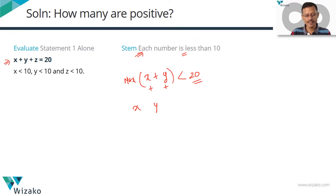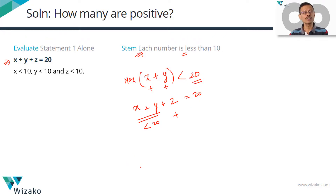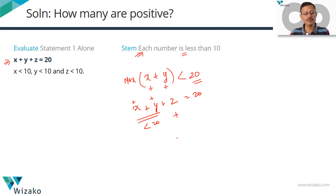If the sum of x, y and z together is equal to 20, and the sum of x and y is already less than 20 even at its maximum, then z must contribute positively to reach 20. We already know x and y are positive from this reasoning. So z must also be positive. If x, y and z are all less than 10 and their sum equals 20, that's possible only when all three numbers are positive. From Statement 1, we have a unique answer — one alone is sufficient.